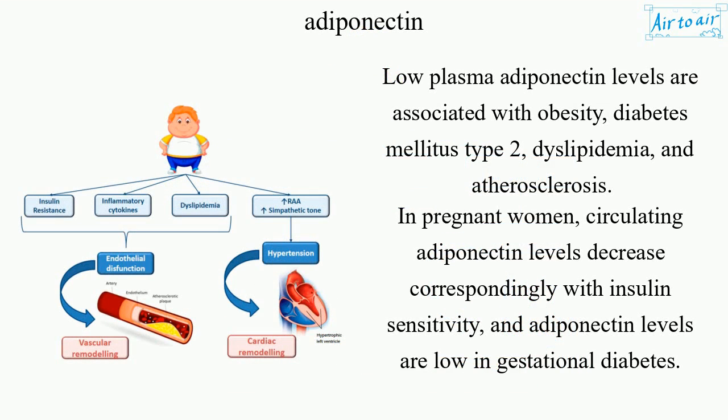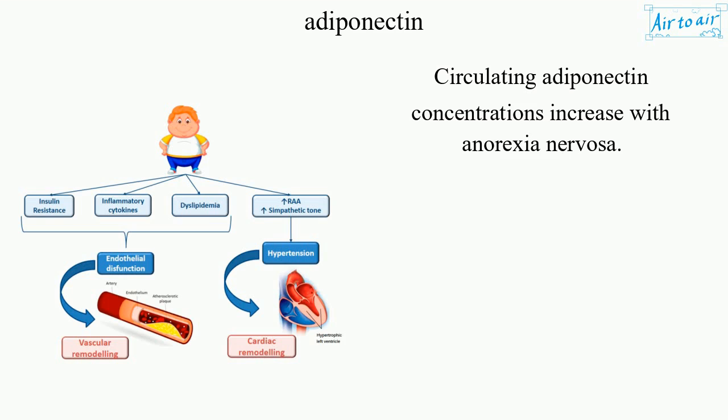Low plasma adiponectin levels are associated with obesity, diabetes mellitus type 2, dyslipidemia, and atherosclerosis. In pregnant women, circulating adiponectin levels decrease correspondingly with insulin sensitivity, and adiponectin levels are low in gestational diabetes. Circulating adiponectin concentrations increase with anorexia nervosa.